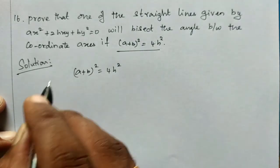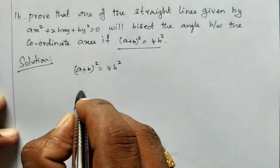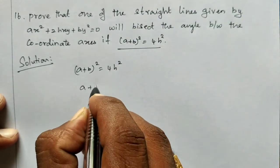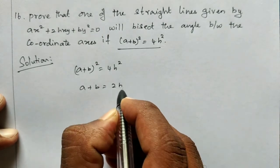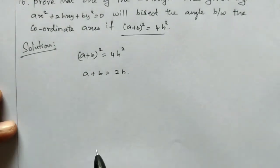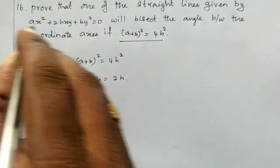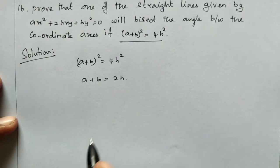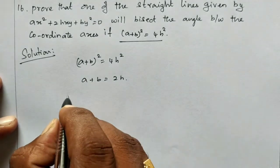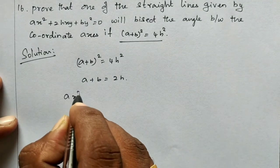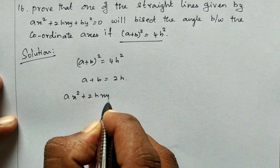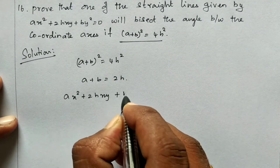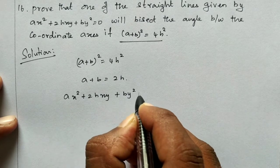If we take the two conditions, A plus B is equal to 2H, or A plus B is equal to 2H. The equation is AX² + 2HXY + BY² = 0.